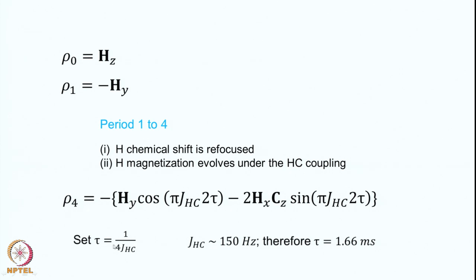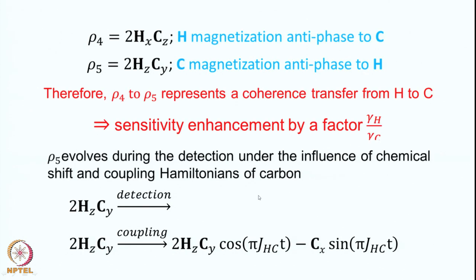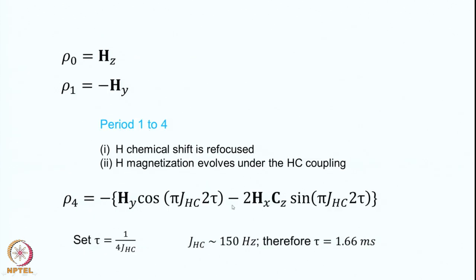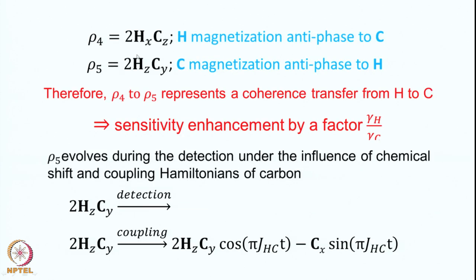Now we set τ equal to 1/(4J_HC). When I substitute this, the argument becomes π/2, so the cosine term goes to 0 and the sine term becomes 1. Notice the minus sign and the minus sine become plus, so ρ4 becomes simply 2HxCz. This is the proton magnetization in antiphase with respect to carbon — exactly as we learned from the product operator description.